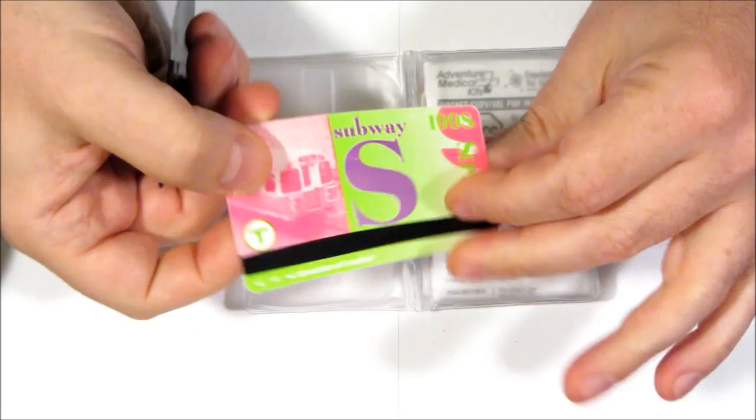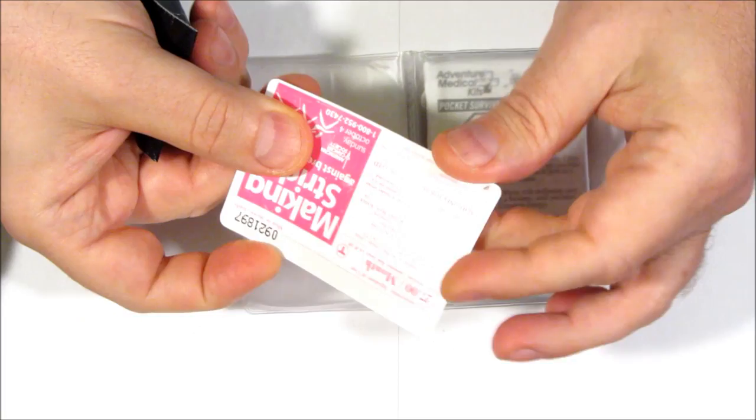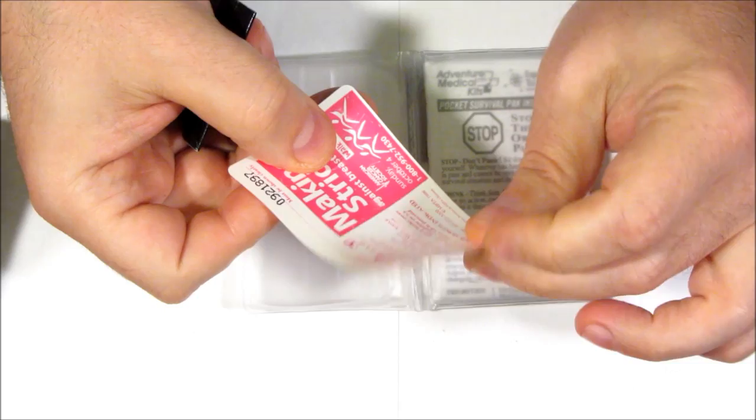Here's just a little subway pass. It's an old one, but it's a nice piece of stiff plastic. This can be useful for getting through certain kinds of locks. There's sometimes applications where you need a very thin piece of flexible plastic.